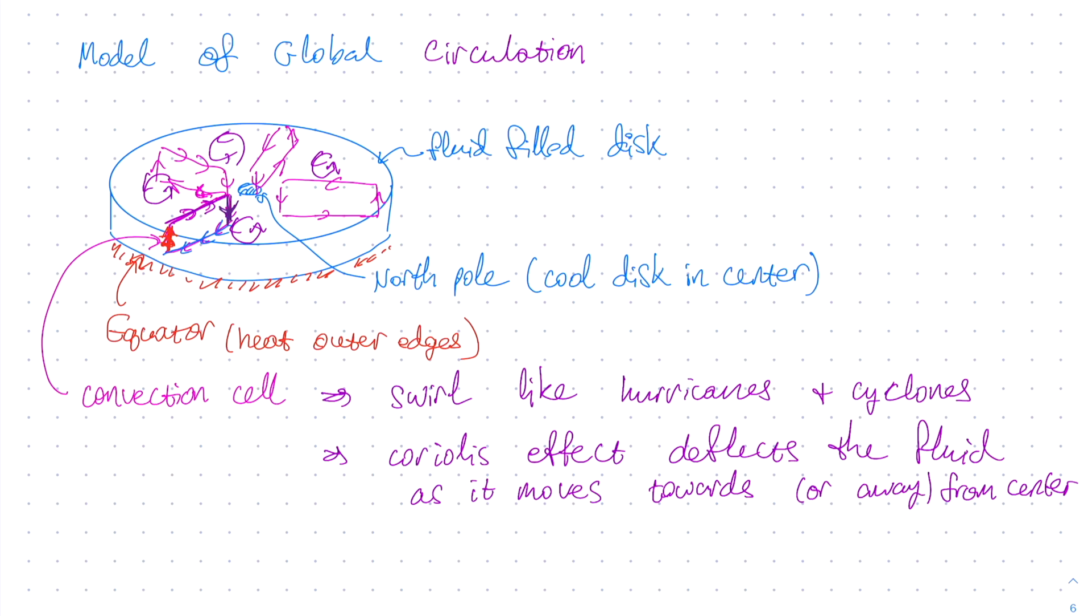In this example, this results in the formation of miniature hurricanes and cyclones. As we have already stated, the Coriolis effect deflects the fluid as it moves either towards the center or away from the center of the dish. This causes the fluid to swirl. In this example we have the dish set up to rotate in the same direction as the northern hemisphere, and therefore the swirling is counterclockwise just like cyclones and hurricanes in the northern hemisphere of the earth. In the southern hemisphere the Coriolis effect goes in the other direction, and therefore cyclones and typhoons as hurricanes are called in the southern hemisphere swirl clockwise as opposed to counterclockwise.